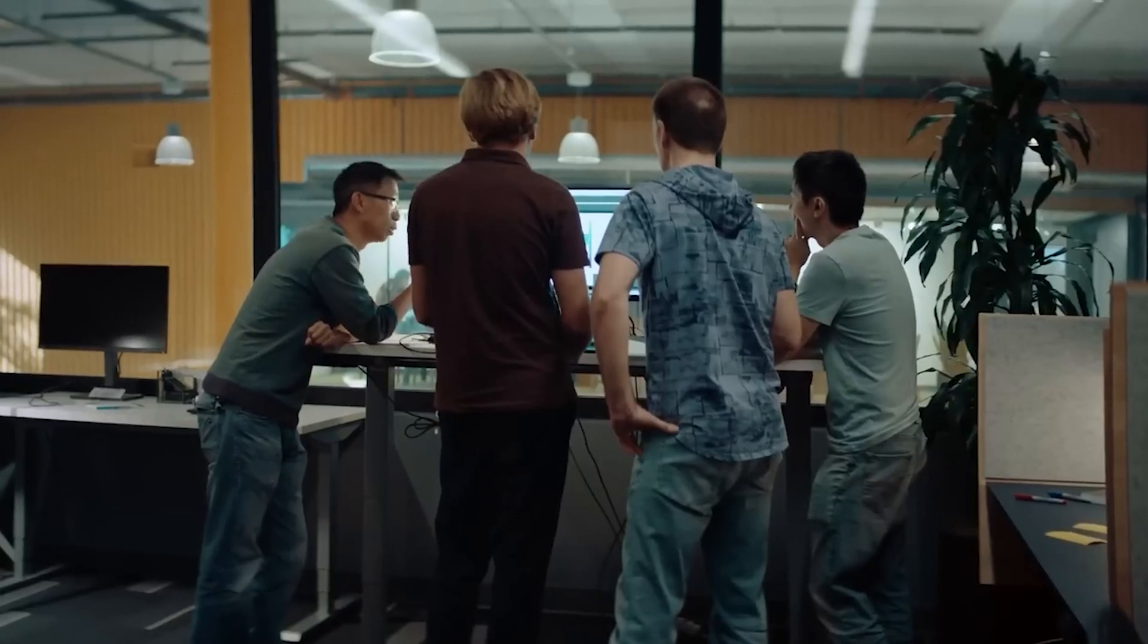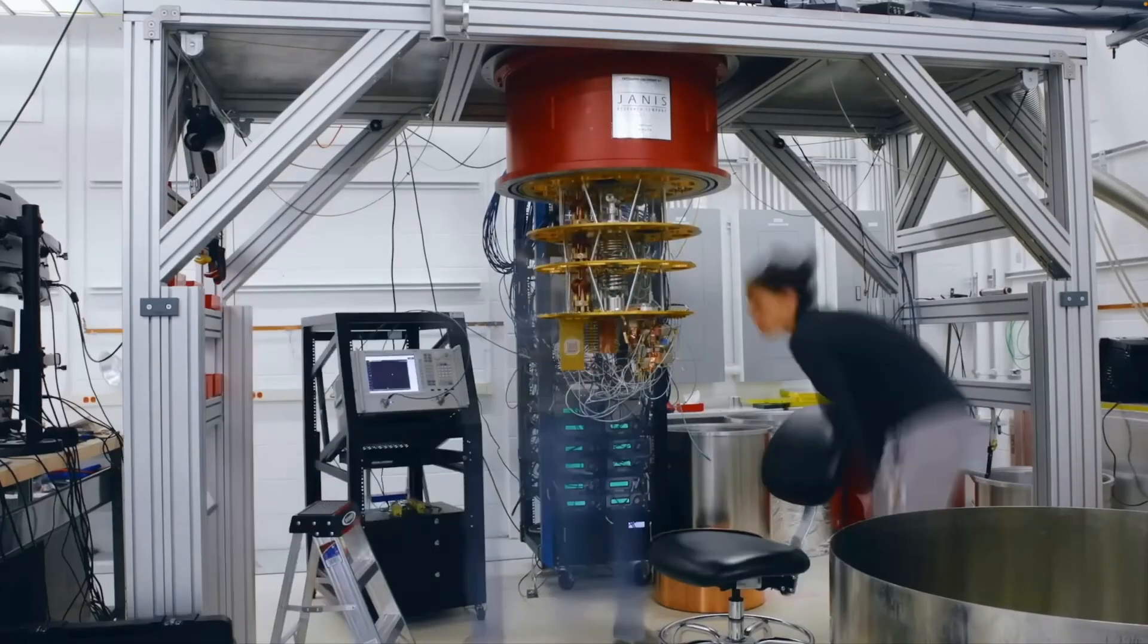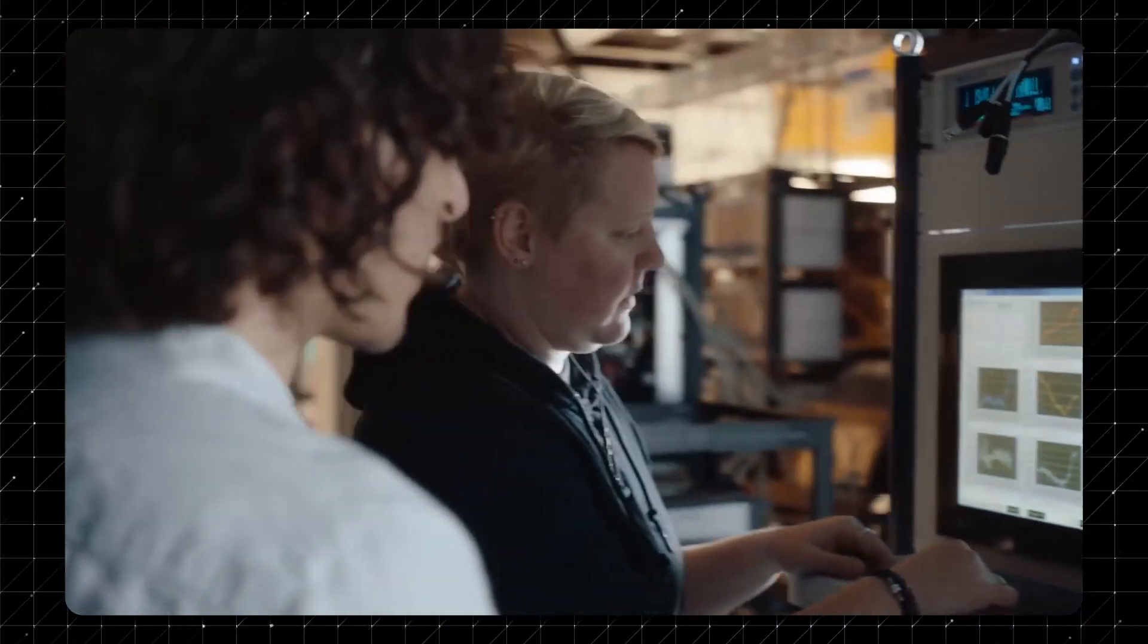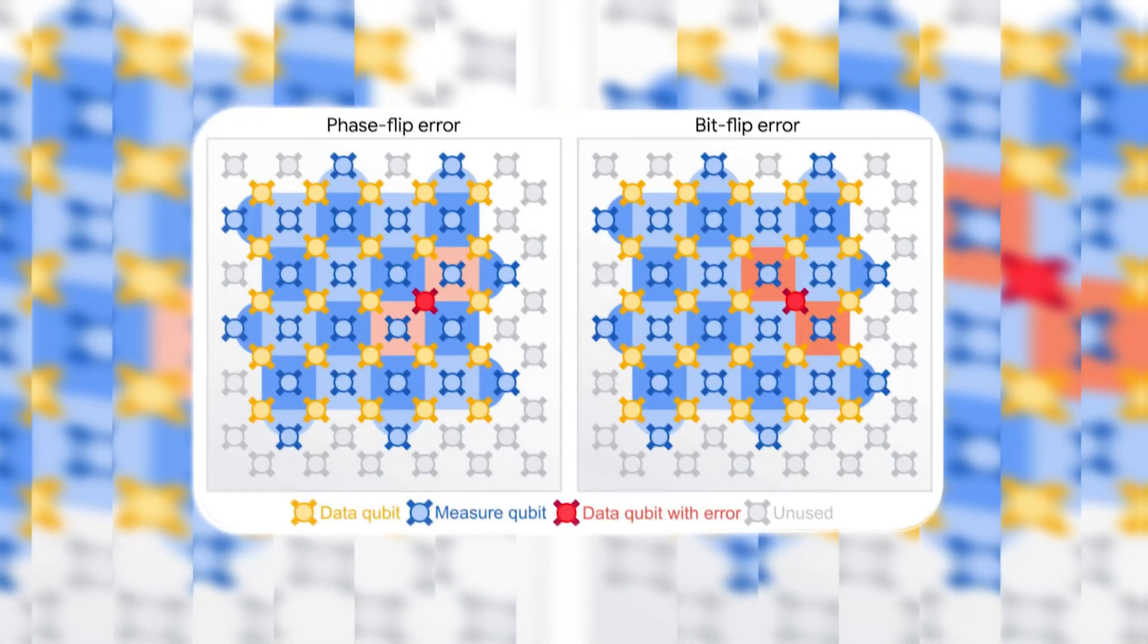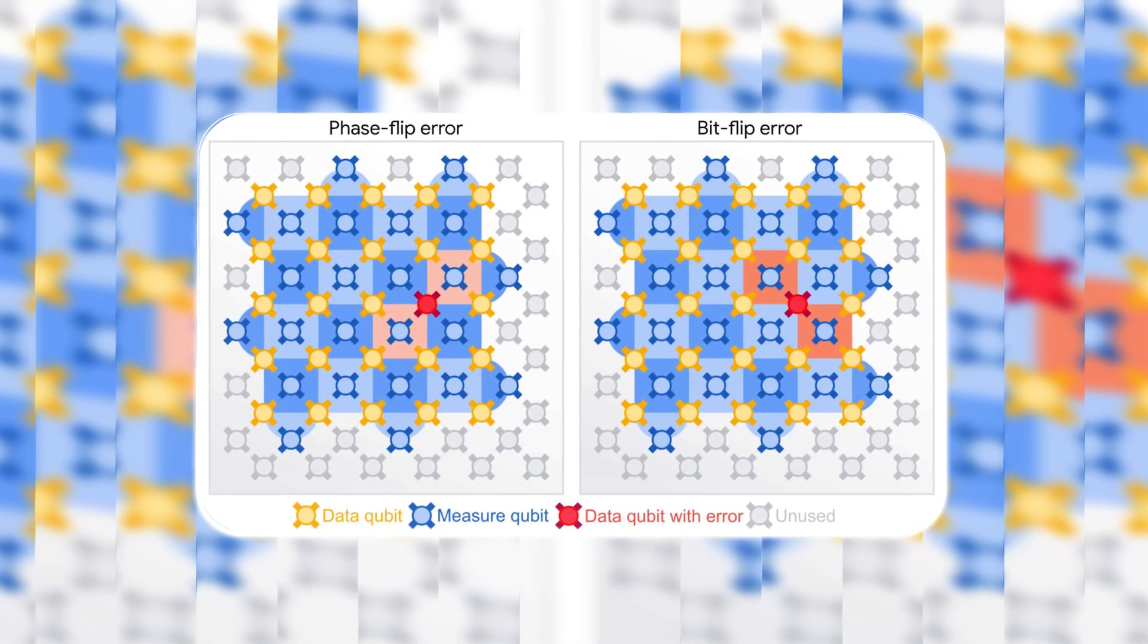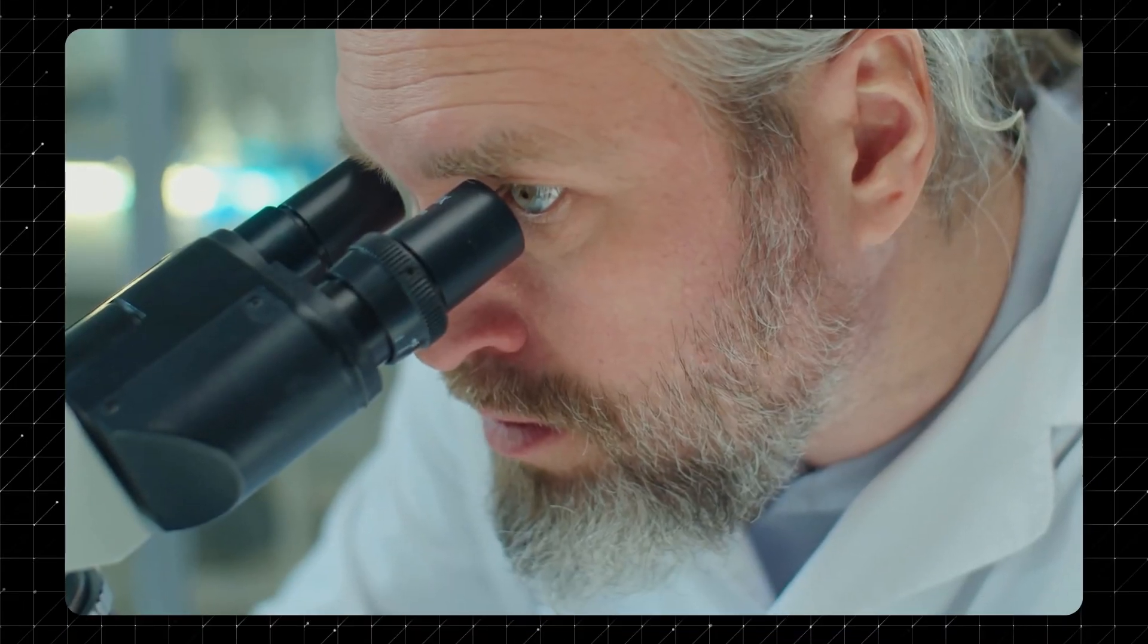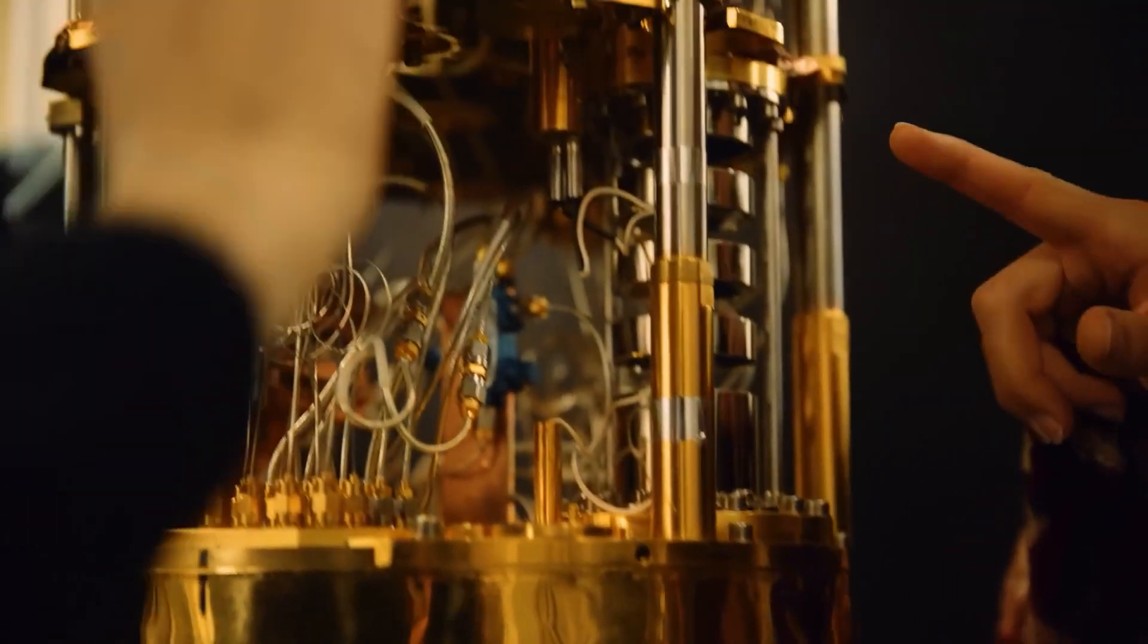For decades, quantum error correction has been the Achilles' heel of quantum computing. As promising as the technology is, scaling up quantum systems has always come at a steep cost. The more qubits you add, the more errors they generate, a fundamental issue that has made large-scale, stable quantum systems seem unattainable. Scientists have spent years searching for a solution, but until now, none have fully solved the problem.